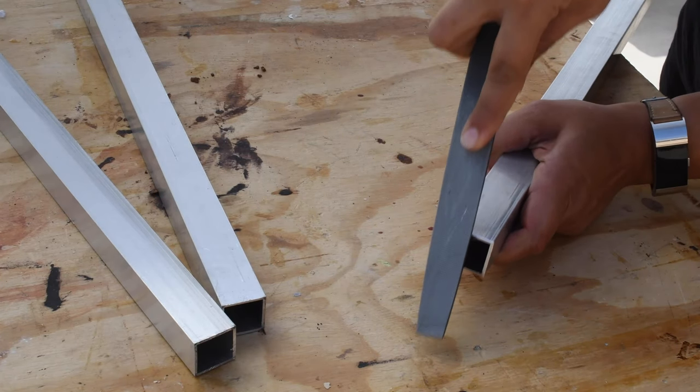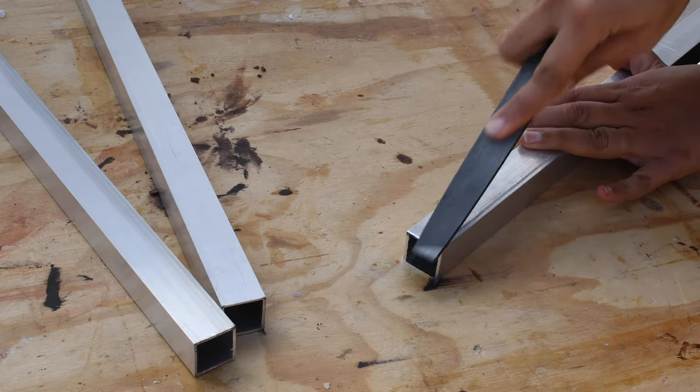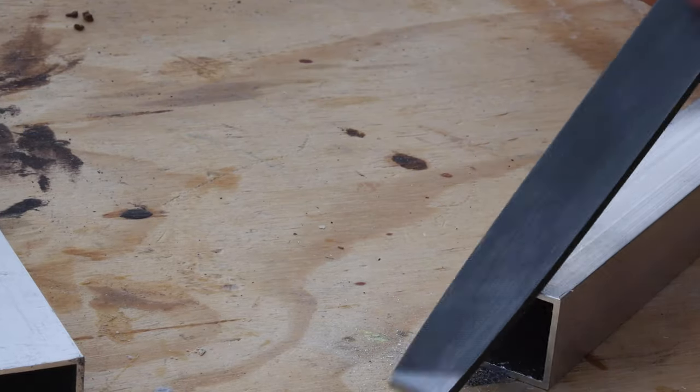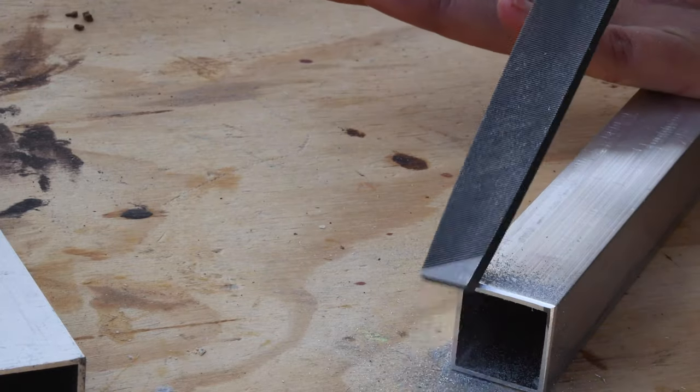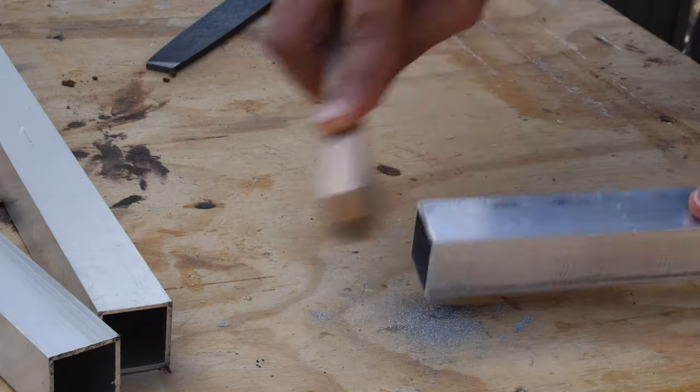Then I used a metal file and made a channel on each of the four sides of the end of the tube that was going to be joined. I followed that with cleaning up the ends with a wire brush.